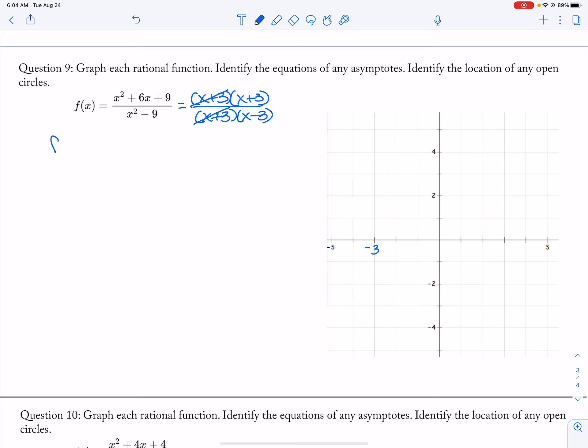So f of negative 3 is negative 3 plus 3 over negative 3 minus 3, which is 0. So here, I got an open circle. So my vertical asymptote is at positive 3 because I take my 3 there, my x minus 3, and I set it equal to 0.